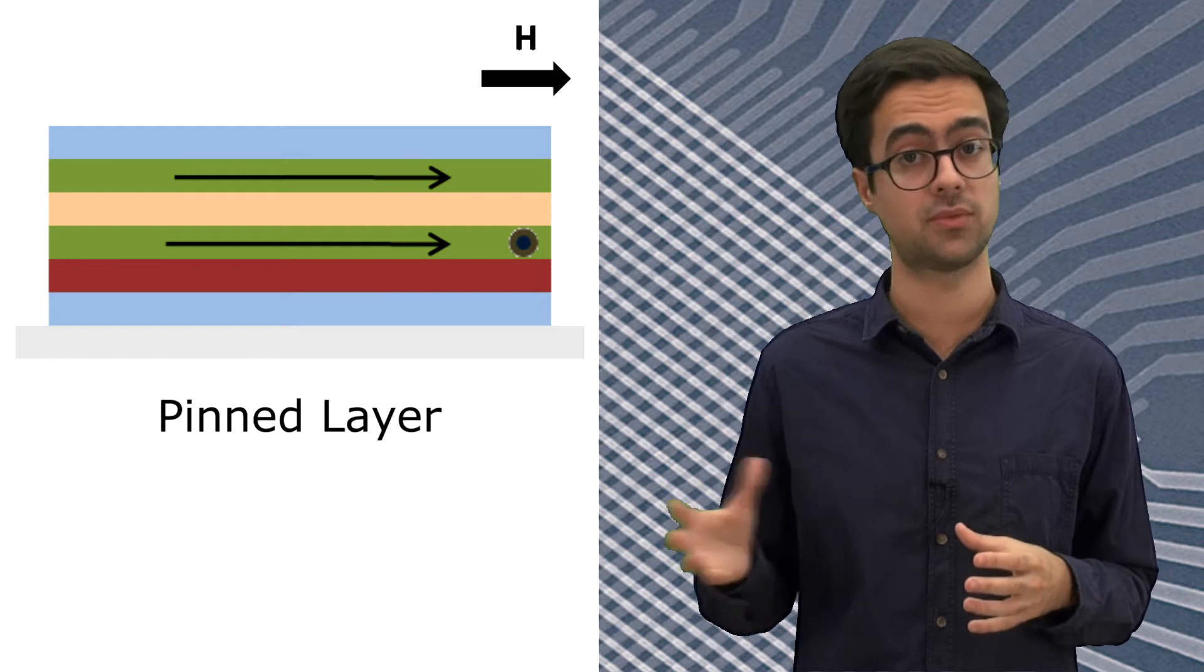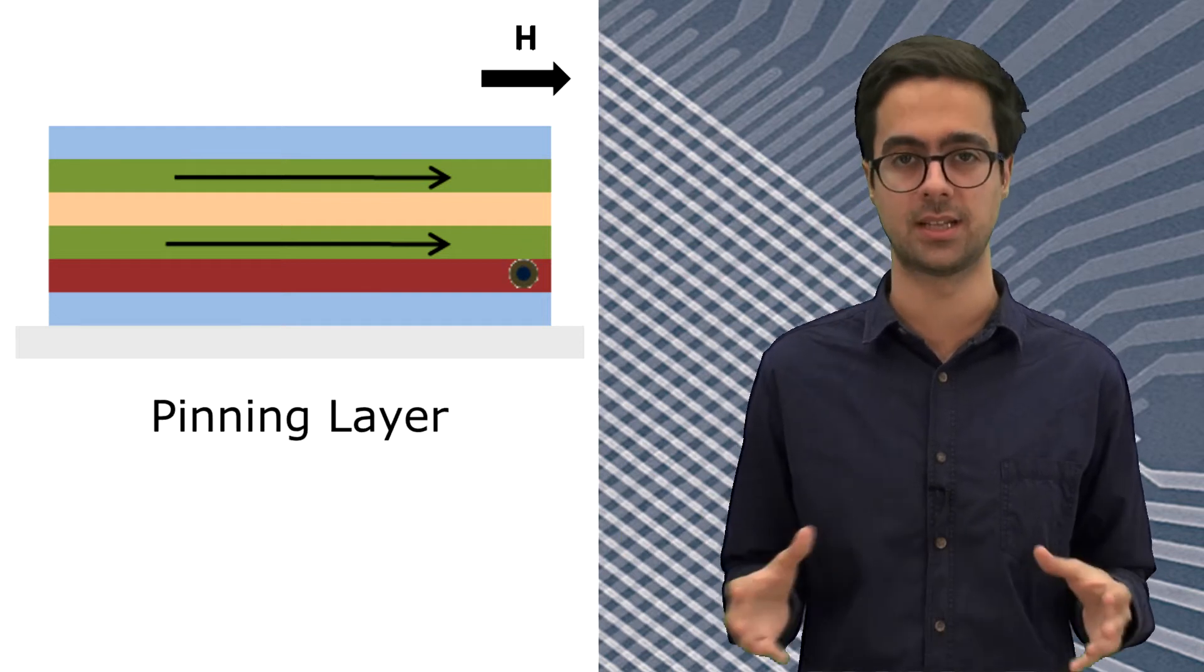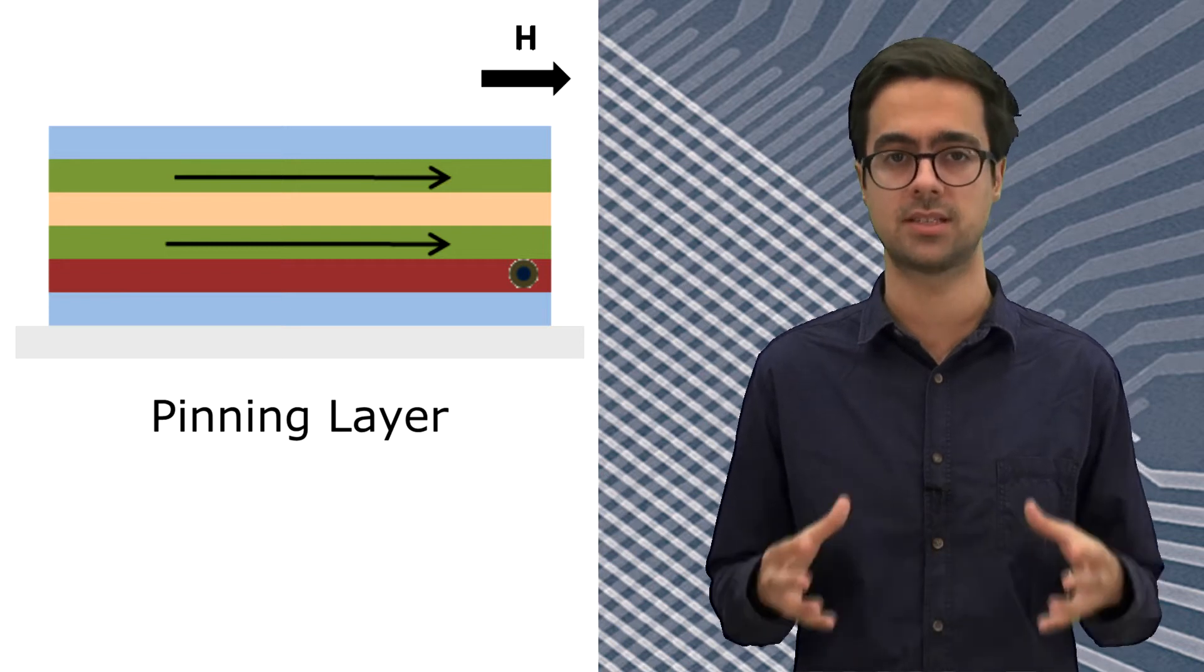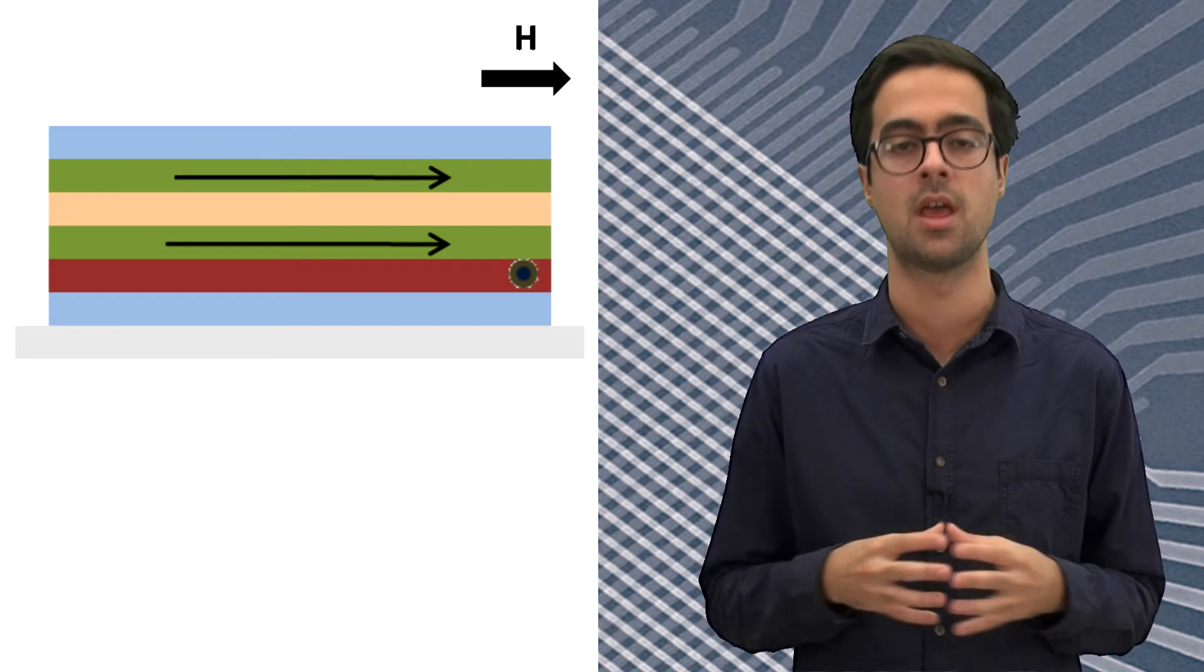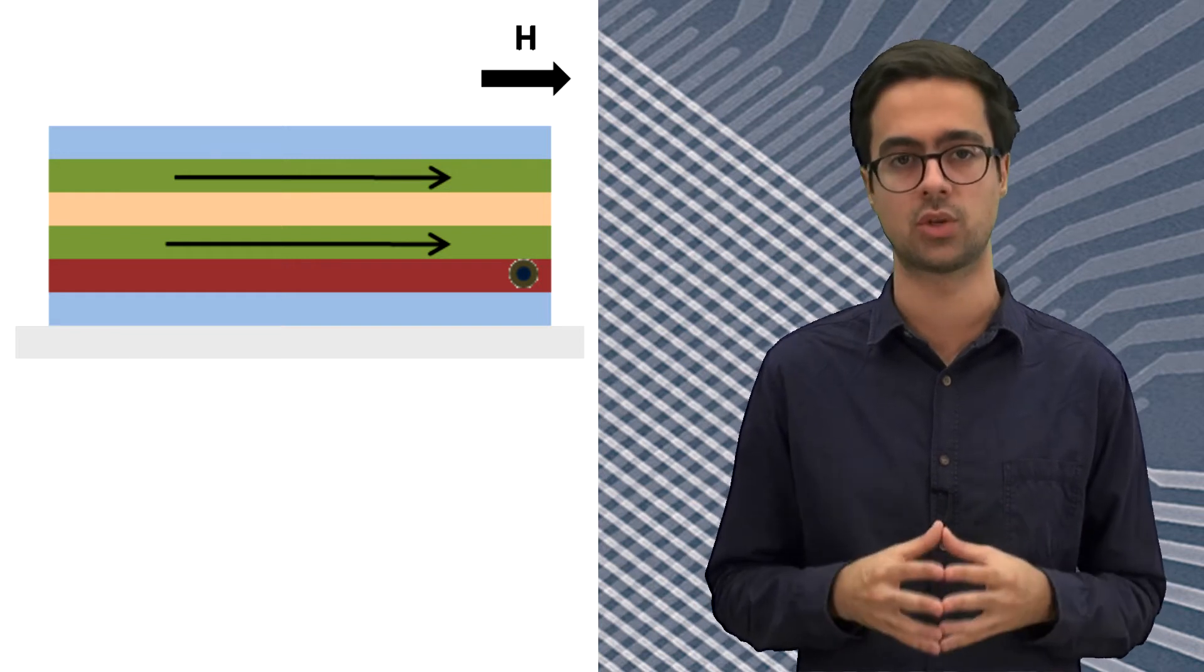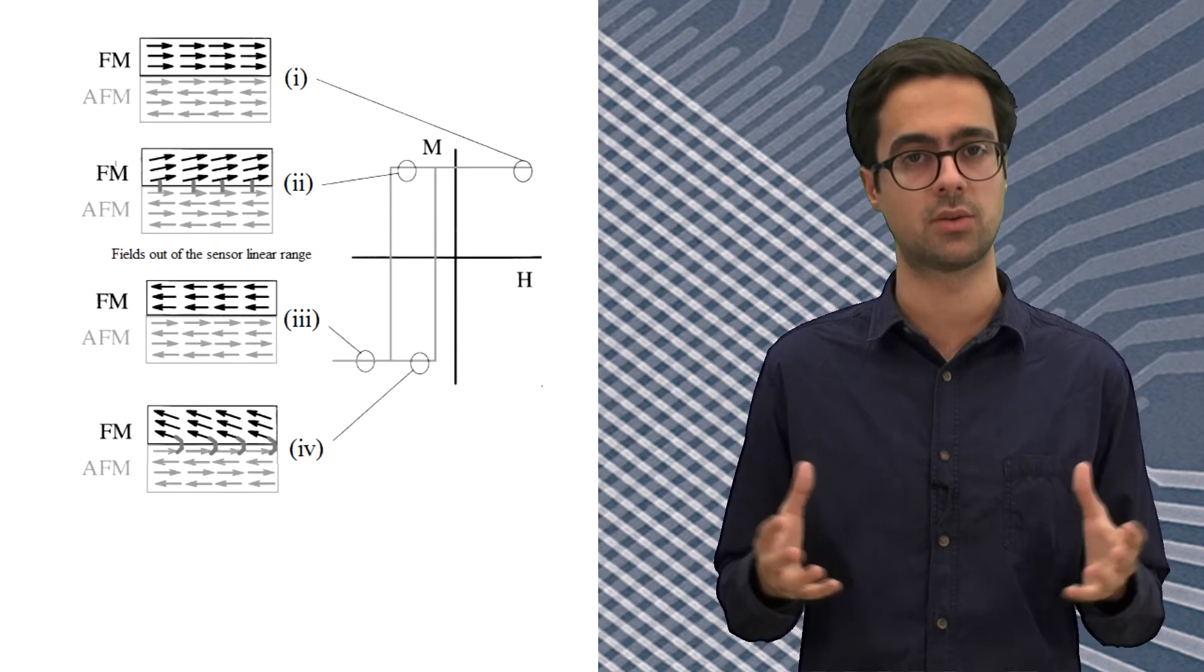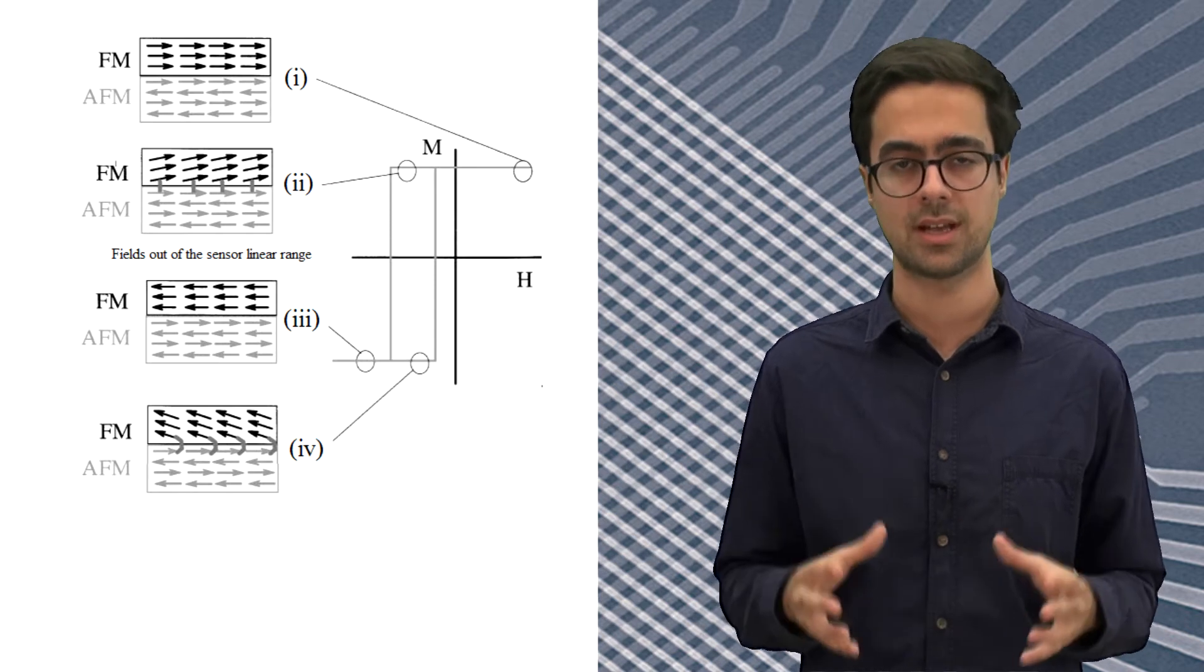But why does the magnetization stay fixed even under the influence of the field? That is the role of the pinning layer. This layer is an anti-ferromagnet which rigidly sets the magnetization of the neighbor ferromagnetic layers to have a specific orientation by inducing a unidirectional exchange anisotropy. In other terms, it gives a preferential direction for the magnetization, holding the reference layers even with an external field applied.